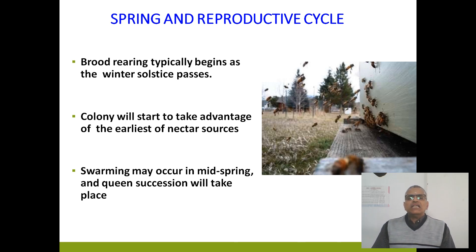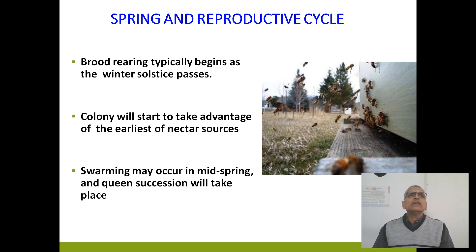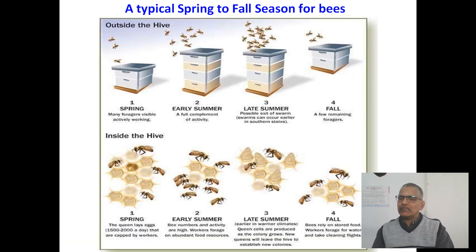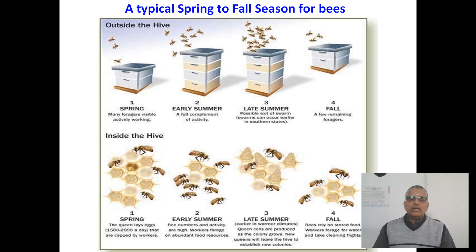The reproductive cycle is very prominent during spring season. The colony will start to take advantage of the earliest nectar sources. Swarming may occur in mid-spring and queen succession will take place. There are four seasons: spring, early summer, late summer and fall.